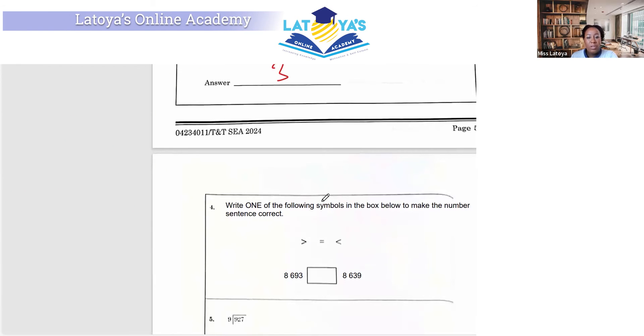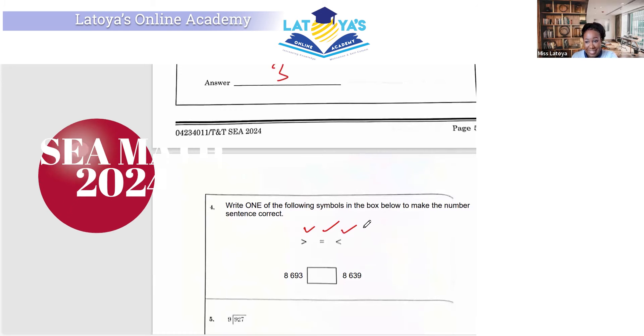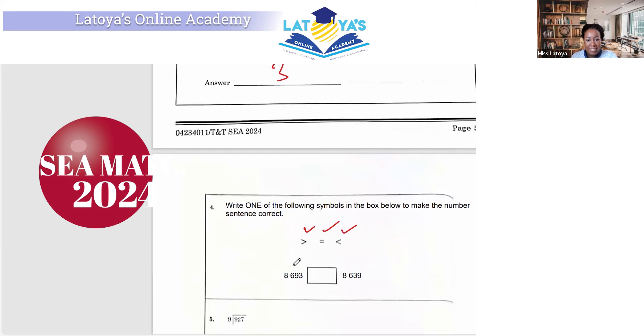Question four. Write one of the following symbols in the box below to make the number sentence correct. We have the greater than sign, the equal to sign, and the less than sign. 8,693 is greater than 8,639.